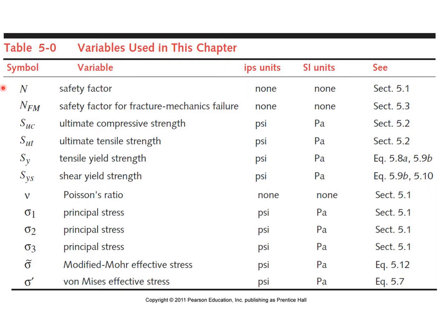Before we begin our discussion, I want to talk about the variables we'll be using for this lecture. The first is our safety factor, N. Then we also have four strengths: our ultimate compressive strength, ultimate tensile strength, our yield strength in tension, as well as our yield strength in shear. One thing to note is that we don't have anything here that says our yield strength in compression, SYC.